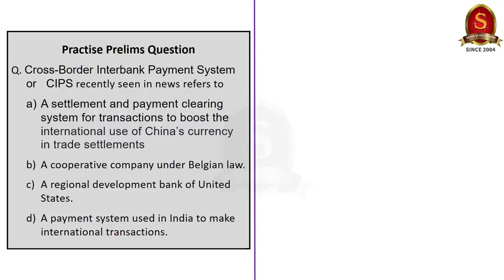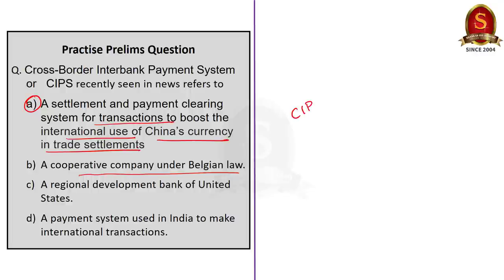The second question asks: Cross-border Interbank Payment System or CIPS recently seen in news refers to what? The correct answer is option A — it is a settlement and payment clearing system for transactions to boost the international use of Chinese currency in trade settlements. CIPS is another alternative to the SWIFT system, a China-based financial messaging service used to settle international transactions.